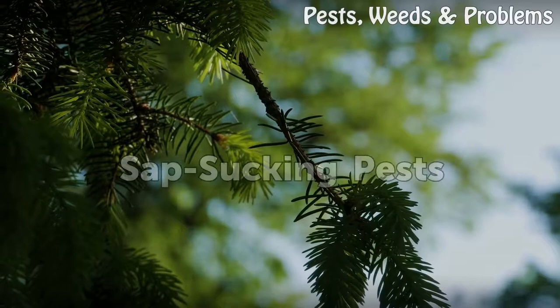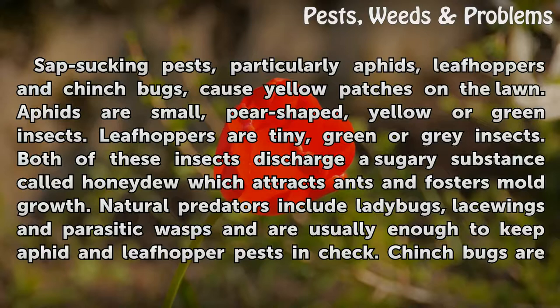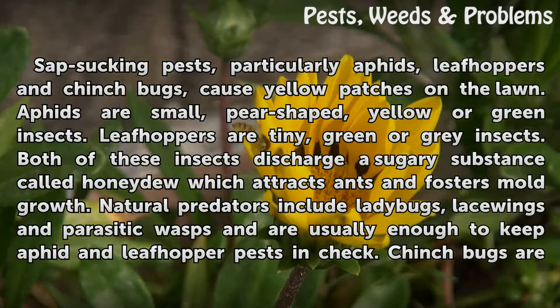Sap-sucking pests, particularly aphids, leafhoppers and chinch bugs, cause yellow patches on the lawn. Aphids are small, pear-shaped, yellow or green insects. Leafhoppers are tiny, green or gray insects. Both of these insects discharge a sugary substance called honeydew, which attracts ants and fosters mold growth. Natural predators include ladybugs, lacewings and parasitic wasps, and are usually enough to keep aphid and leafhopper pests in check.